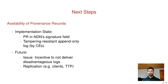As a next point I want to mention availability of provenance records. In our current implementation we have two variants: the first is to include provenance records in NDN's signature field; the second is that compute entities maintain tamper-resistant append-only logs for all their provenance records. It is an issue that compute entities have an incentive not to deliver disadvantageous logs, which is why we are thinking of integrating replication solutions for clients or trusted third parties.